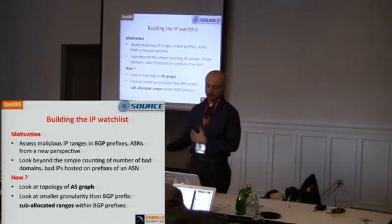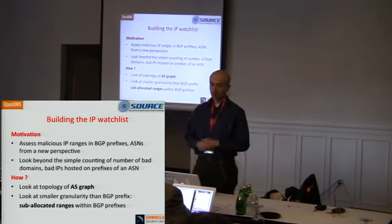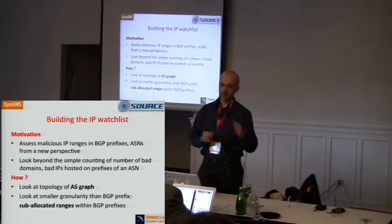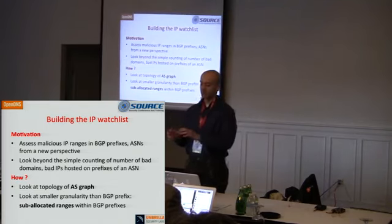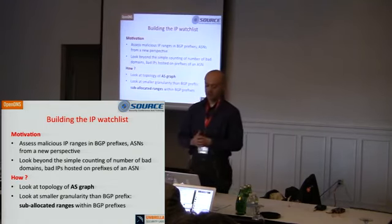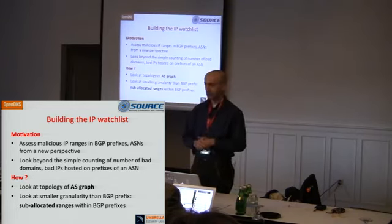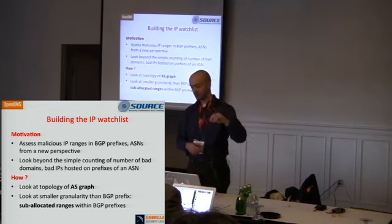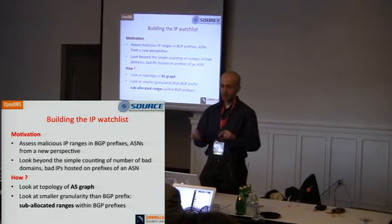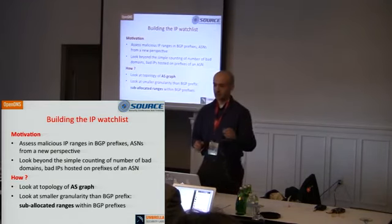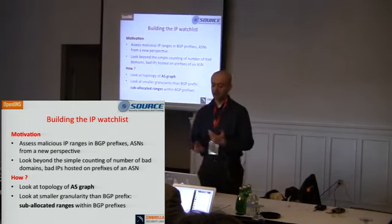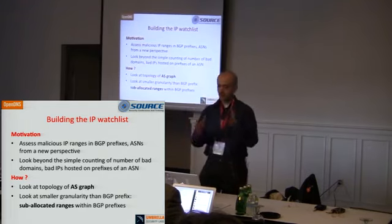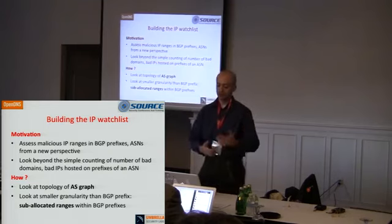The motivation in this project was to assess malicious IP infrastructure from a different perspective than classical approaches. Usually you assign reputation to IPs, prefixes, or ASNs based on how many IPs or domains are hosted at those levels of granularity. Here I tried to look at different perspectives — at a higher level, the ASN topology and ASN graph topology, but also at granularity smaller than the BGP prefix.